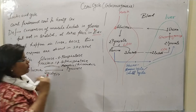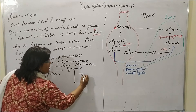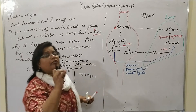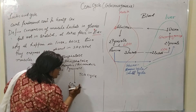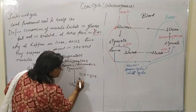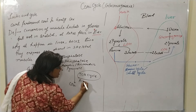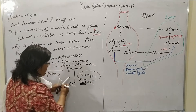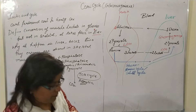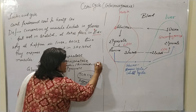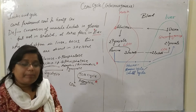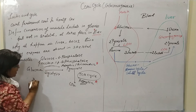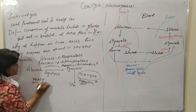Pyruvate is further metabolized by the TCA cycle into CO2 — this is the complete metabolization of glucose. However, the conversion of pyruvate into CO2 via the TCA cycle requires oxygen; aerobic conditions are essential. With complete oxidation, one glucose molecule yields approximately 38 ATP.